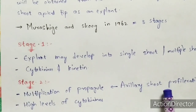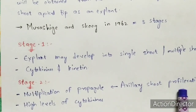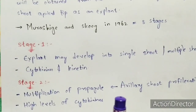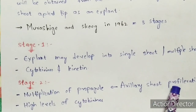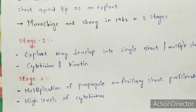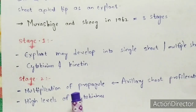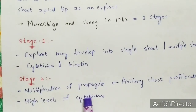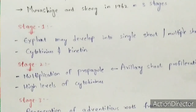Stage two is the multiplication of the propagule, and axillary shoot proliferation is followed in this stage because it maintains higher genetic stability. Higher genetic stability is very important when you perform plant tissue culture. In stage two, high levels of cytokinins are required. There are three types of plant growth hormones — auxins, cytokinins, and gibberellins — and cytokinins are required at very high levels in stage two.